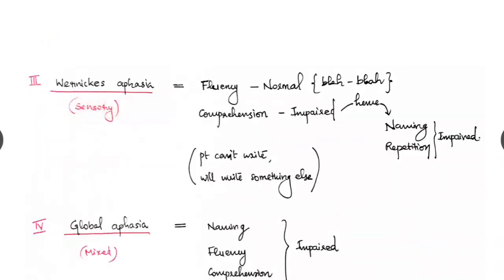Third one the Wernicke's aphasia, the sensory aphasia that is defective in sensation of the speech. Where the fluency will be normal. The comprehension will be impaired. Hence naming and repetition will be impaired. Which means the patient will answer something else. For example, if he asked where did you go yesterday, he will tell that I ate breakfast half an hour before. Like irrelevant answers will be there. So the fluency will be normal.